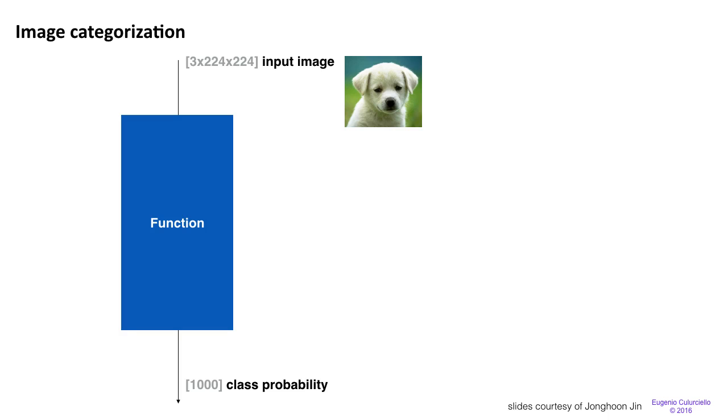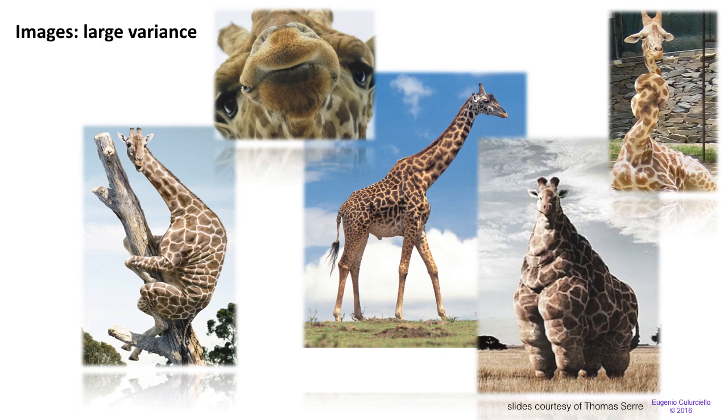Remember the task that we want to solve in this class is image categorization. So we're going to input an image of a certain size to a function, and this function is going to be a neural network. At the output, we want to have the probability of the object contained in that image. But let's think for a bit about images.